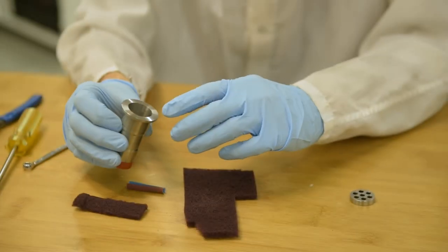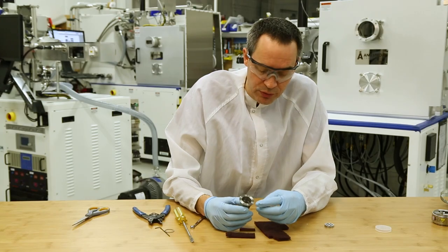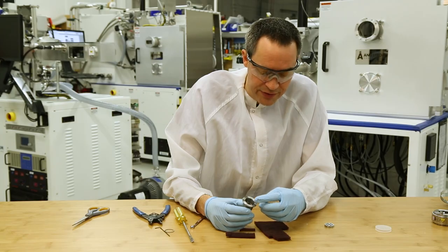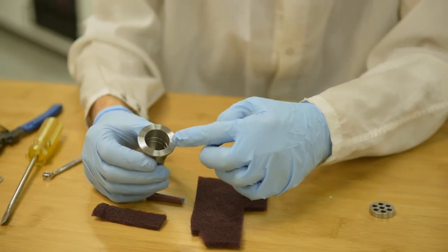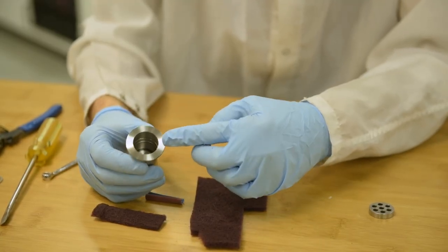Here we have a few small scratches that I'm going to polish out. We're concerned about scratches that may be a conductance path across the o-ring as it seals to the flange on the chamber.